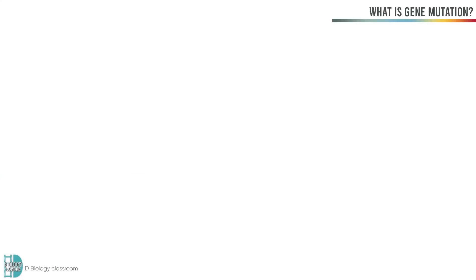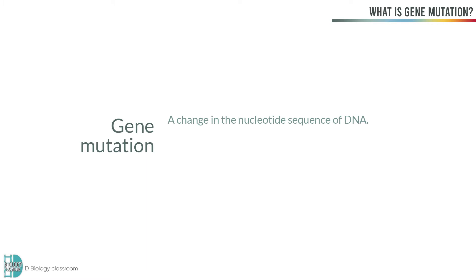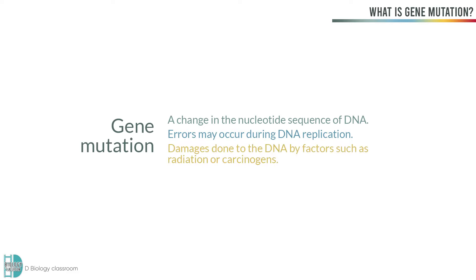Gene mutation is a change in the nucleotide sequence of DNA. The errors may occur during DNA replication, or because of damages done to the DNA by factors such as radiation or carcinogens.